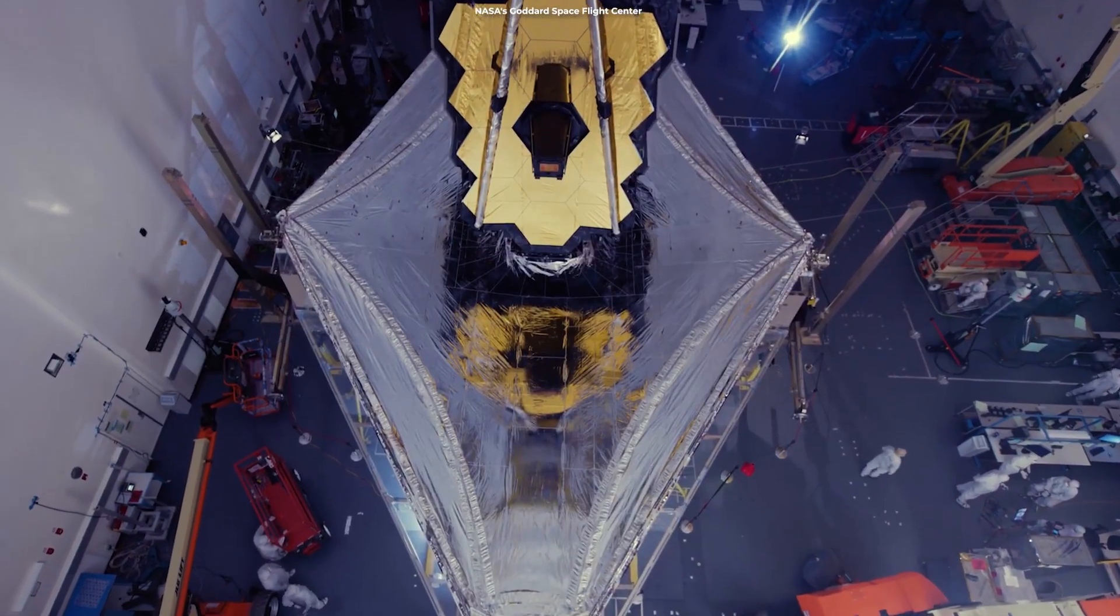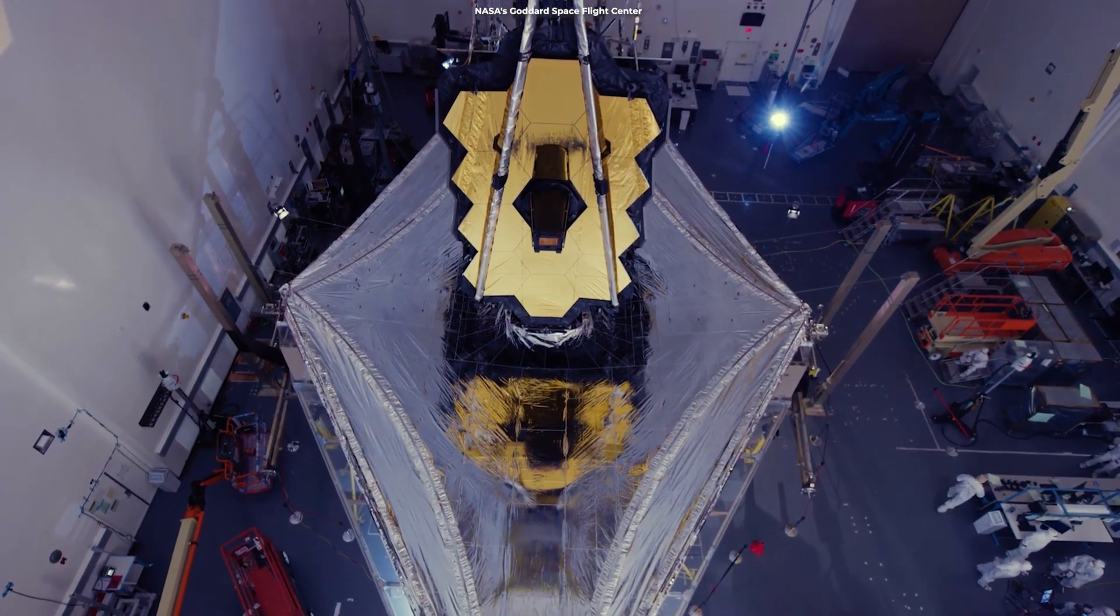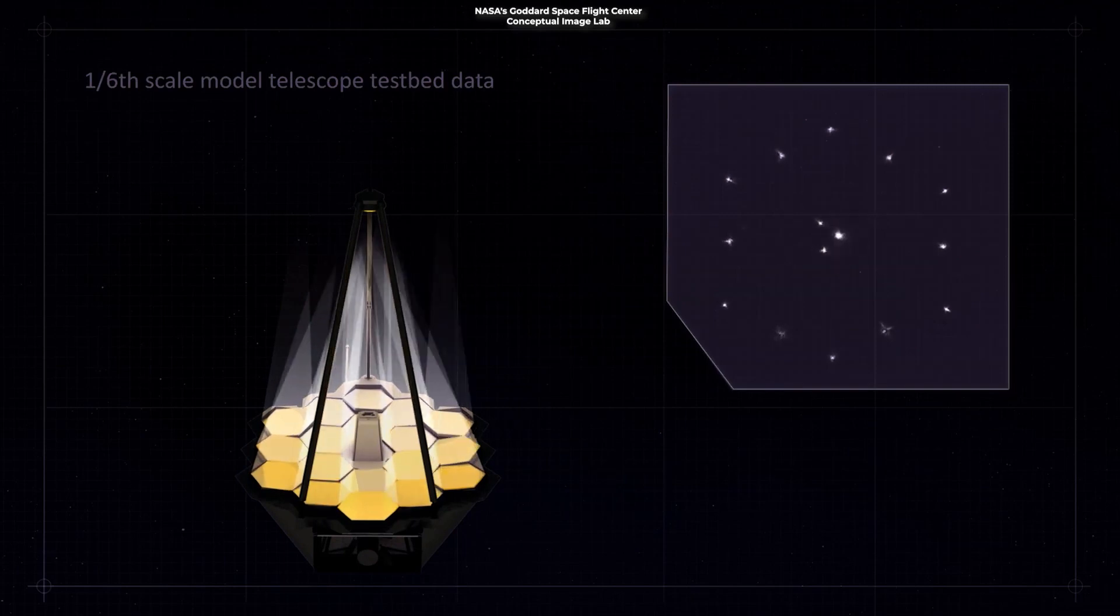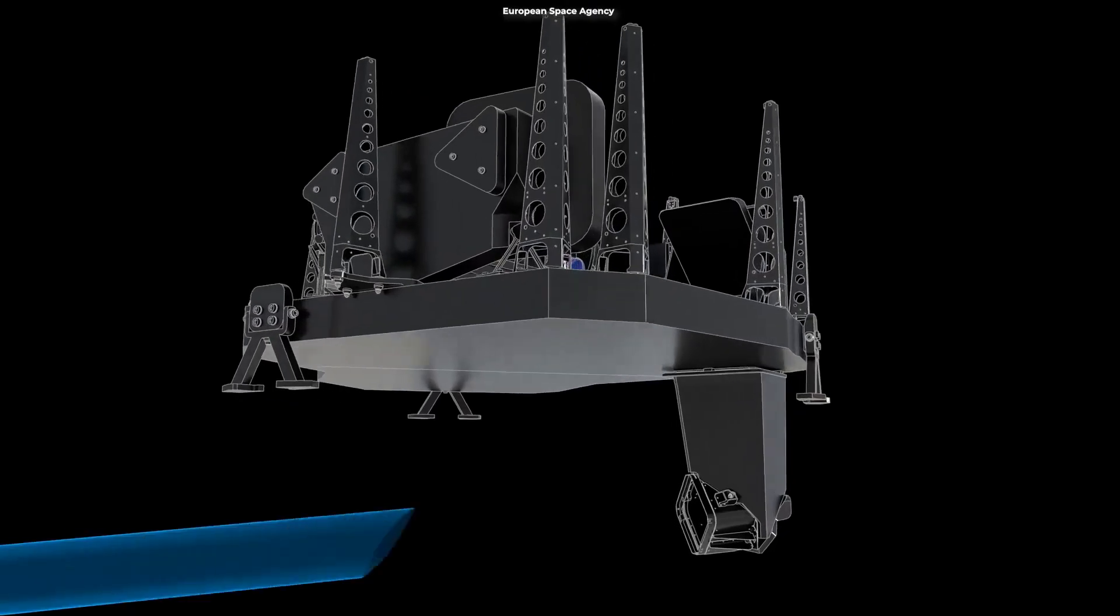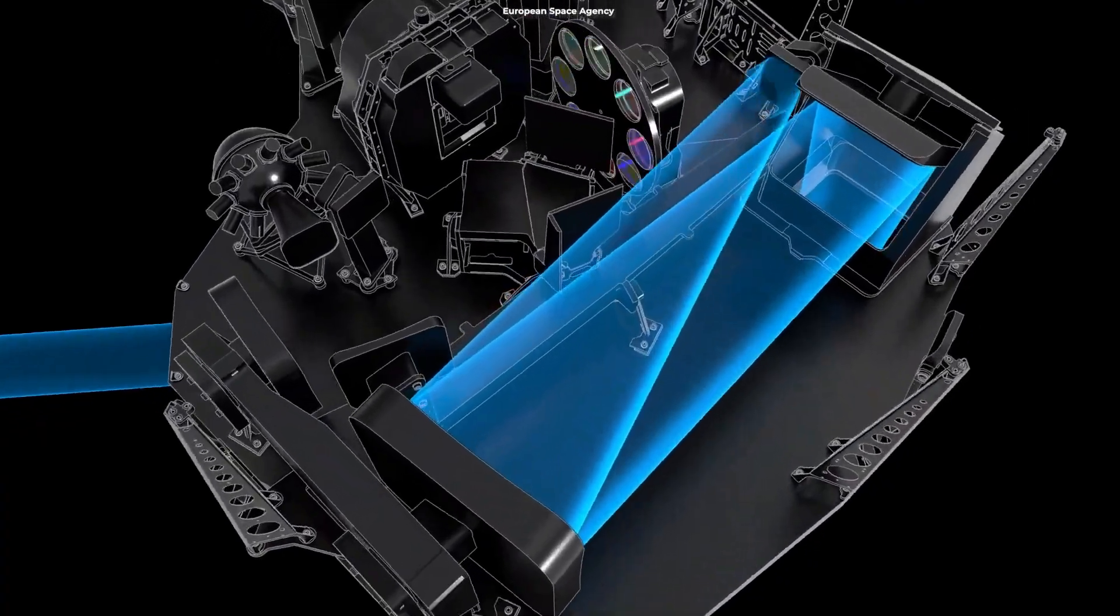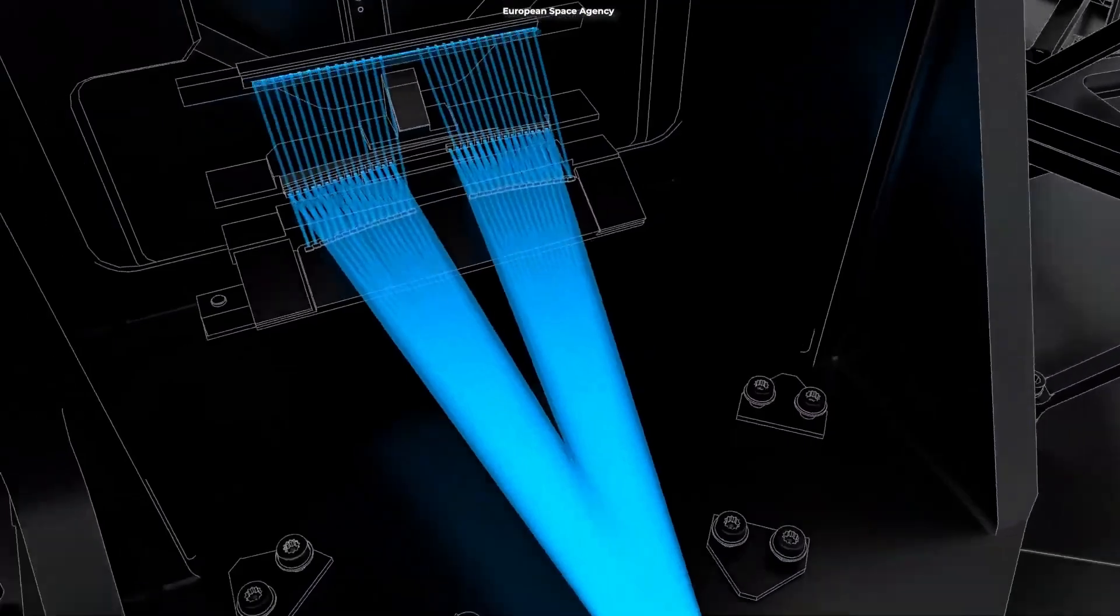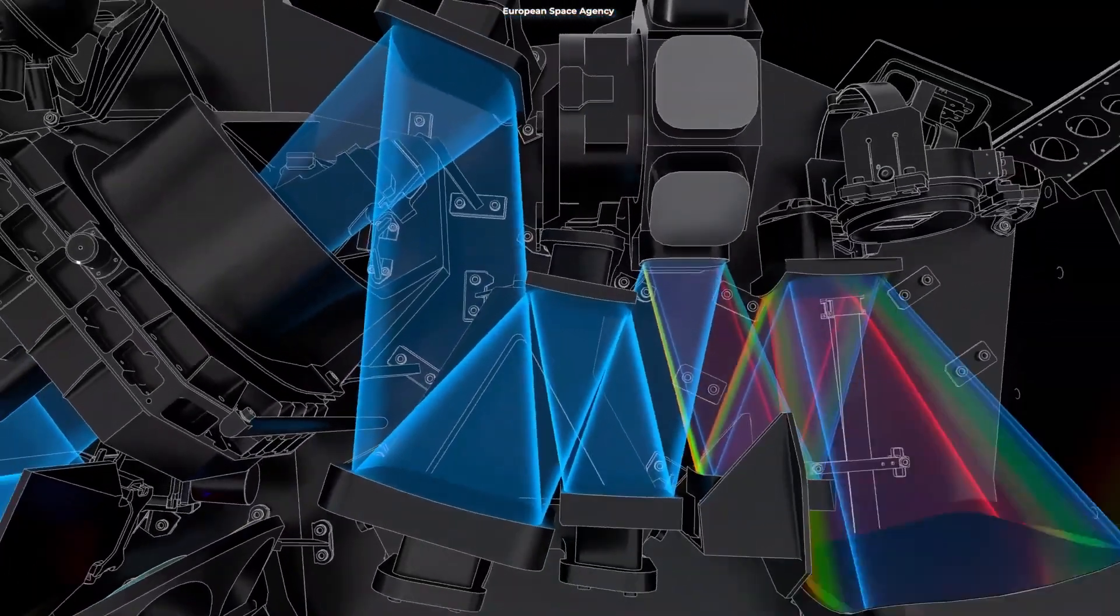The exceptional detail and clarity of these measurements is possible because of Webb's state-of-the-art design. Its 270-square-foot gold-coated mirror collects infrared light efficiently. Its precision spectrographs spread light out into rainbows of thousands of infrared colors, and its sensitive infrared detectors measure extremely subtle differences in brightness.